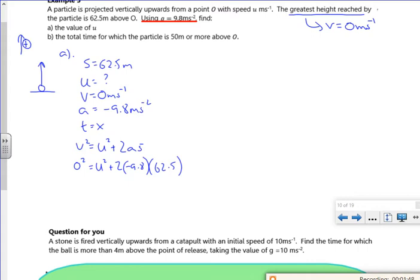Zero squared equals u squared plus 2 times minus 9.8 times 62.5. Right, so that's going to give me, if I move all that over to the other side, 1225 equals u squared, and then if I square root here I'll get 35.